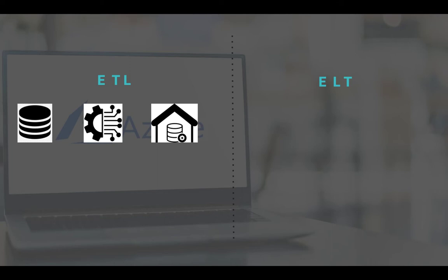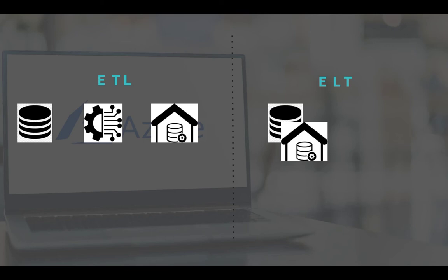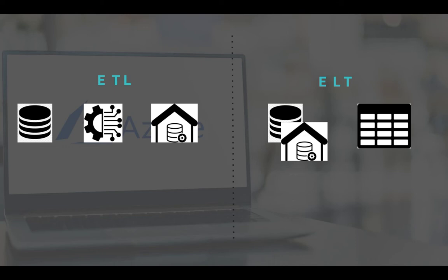A newer approach is ELT — extract, load, and transform — which addresses some flaws in ETL, where transformation can take days, weeks, or months. With ELT, you extract data from different devices, load it to the destination — which could be Azure Synapse, Power BI, or Tableau — and then transform it in real time. This results in minimal lag and a faster data delivery cycle, which is why ELT is increasingly preferred over traditional ETL.